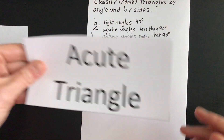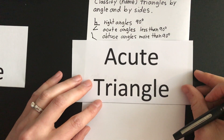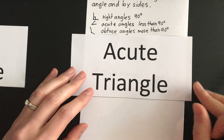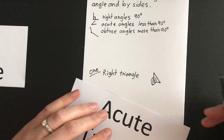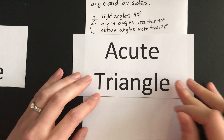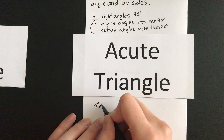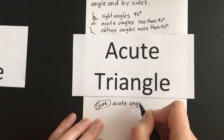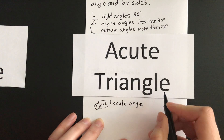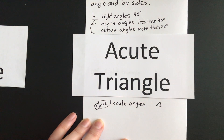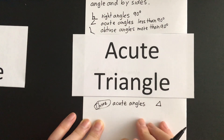Now let's look at acute. An acute triangle — remember, acute angles are less than 90 degrees or less than a right angle. To be called an acute triangle, the right triangle already has acute angles, so having just one is not enough. An acute triangle needs to actually have all three acute angles before we can say it's an acute triangle. All three angles in an acute triangle are less than 90 degrees — one, two, three of them have to be less than 90 degrees.